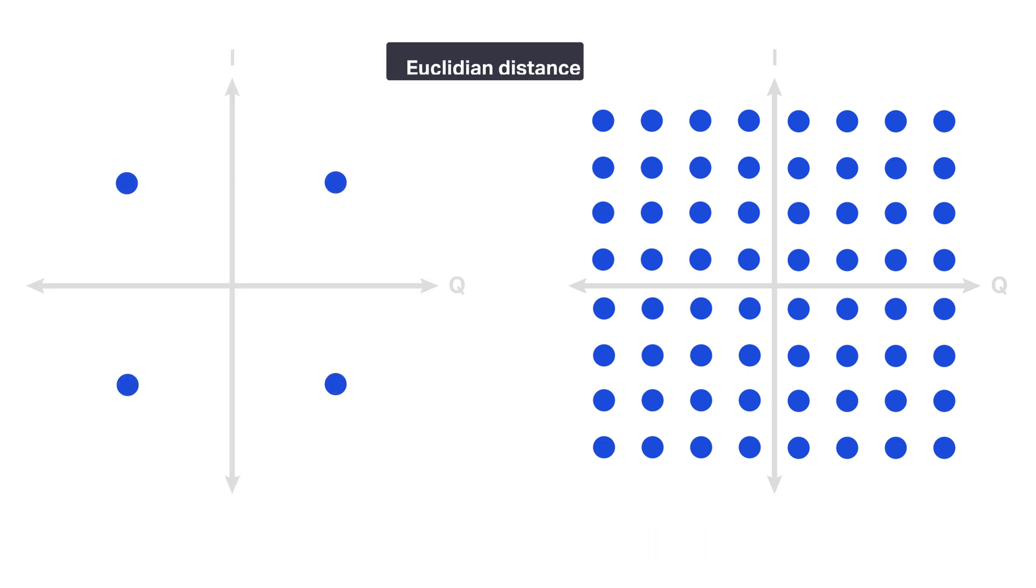However, you see the minimum Euclidean distance, the separation between points is much smaller, so there's much less tolerance for noise.